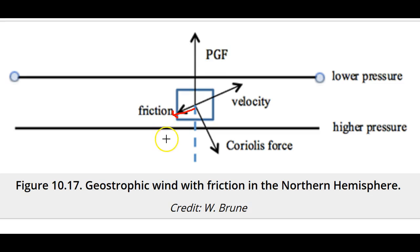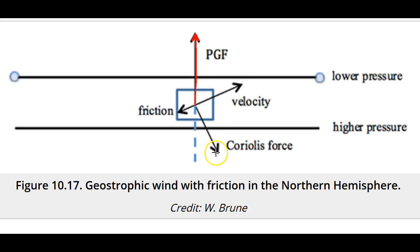Look at what adding a turbulent-resistant term does to the force balance for straight-line flow in the upper boundary layer. The PGF force is perpendicular to the pressure gradient, as usual. However, the friction opposes the velocity and slows it down. At the same time, the Coriolis force is always perpendicular to the velocity and to the right, and because the velocity is slowed down, the Coriolis force is less.